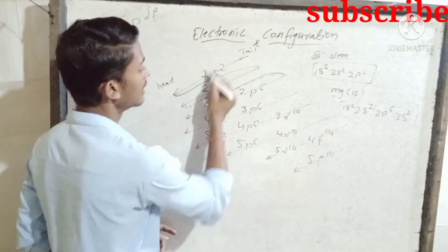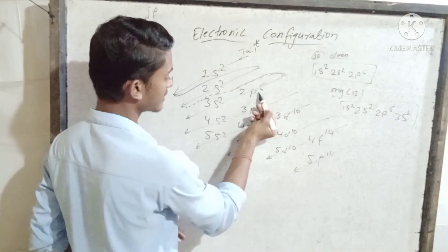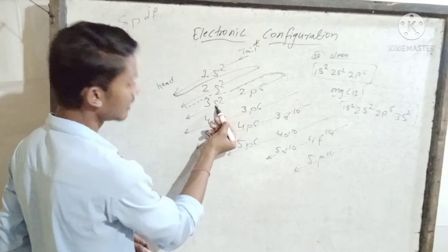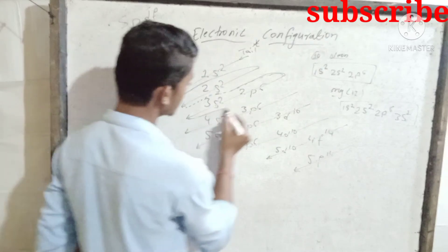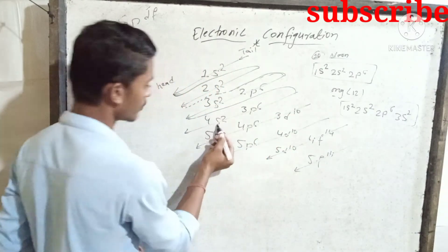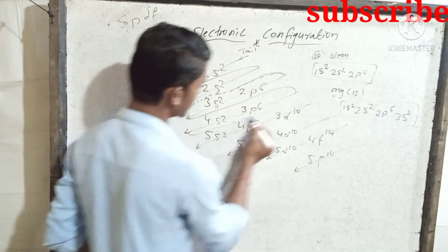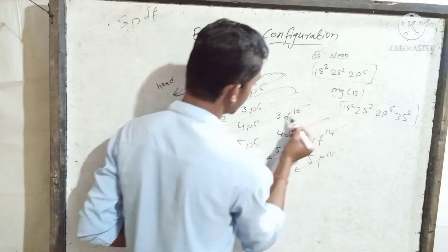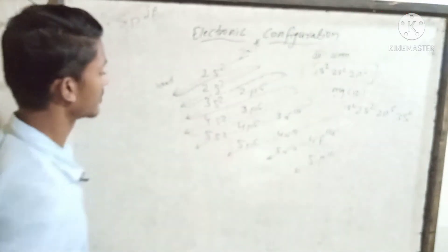Then after 3s comes 3p6, then 4p6, then 3d10, then 4p6, and then 5s2.